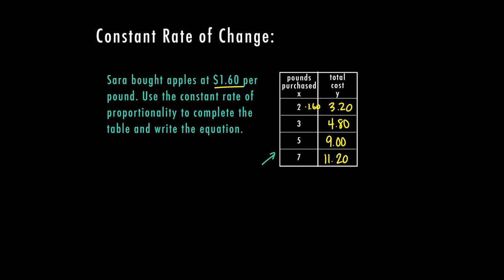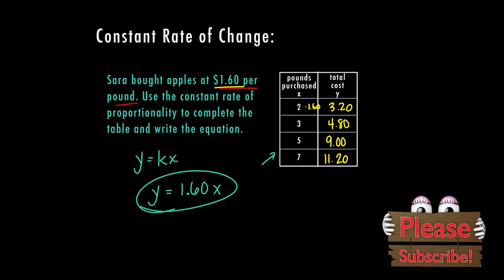So I can tell here based on $1.60 per pound, that every time I buy another pound, I'm going to add $1.60, or I can multiply the amount of pounds I'm buying times $1.60, which means my equation is going to be instead of Y equals KX, I know my K is $1.60 because that is my constant rate of change. So my final equation is Y equals $1.60 or 1.6X. So you don't need the zero in your equation, you could write it either way. But it is in money, so we're going to go ahead and keep it there. So Y equals $1.60X.